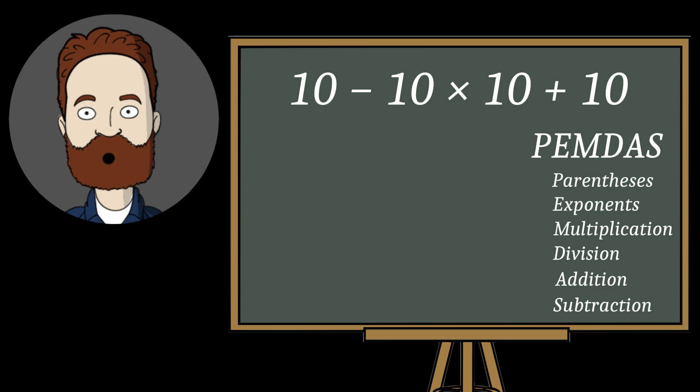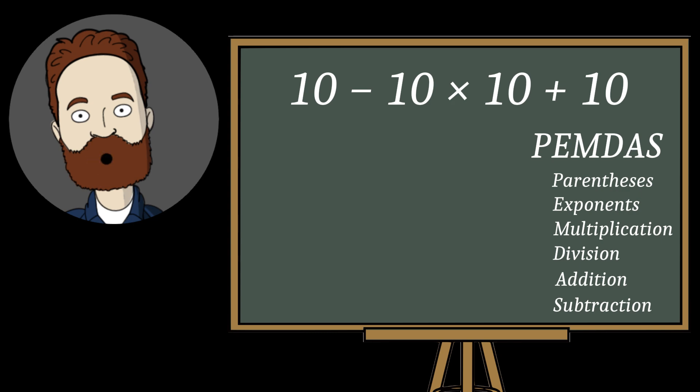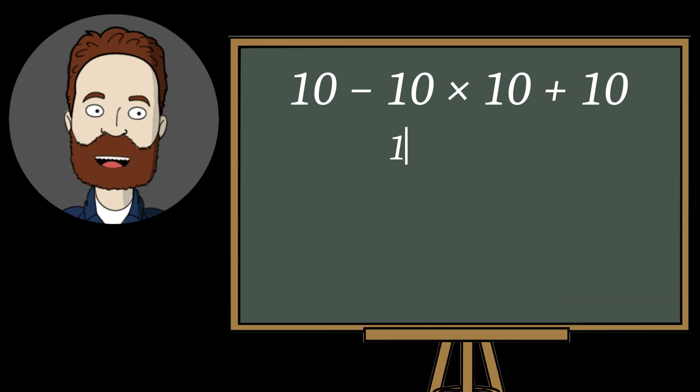Now let's solve it by the rule. In our expression, there's a multiplication, so we do that first. 10 times 10 equals 100.